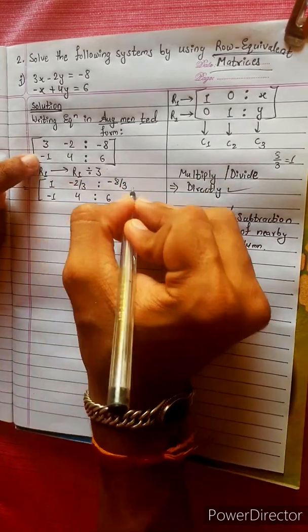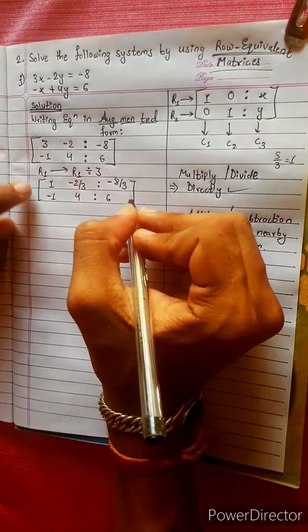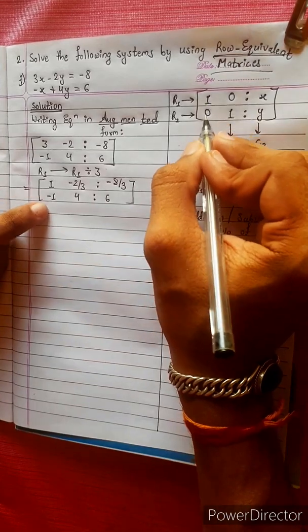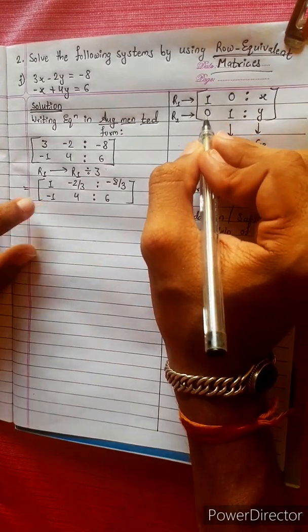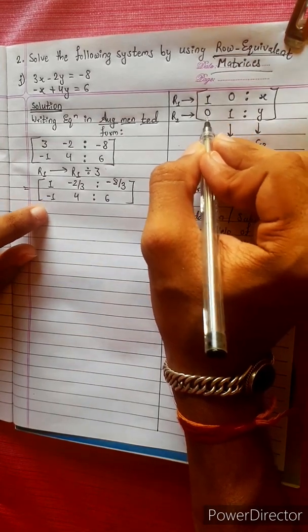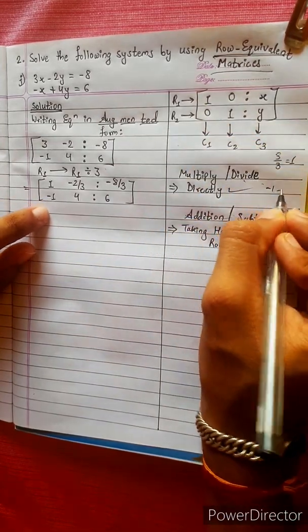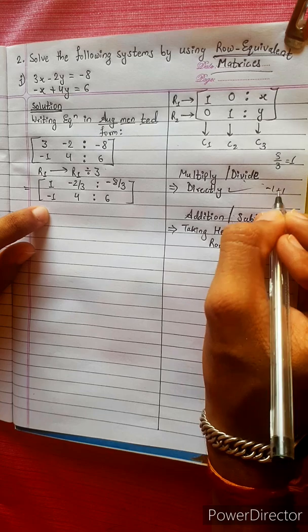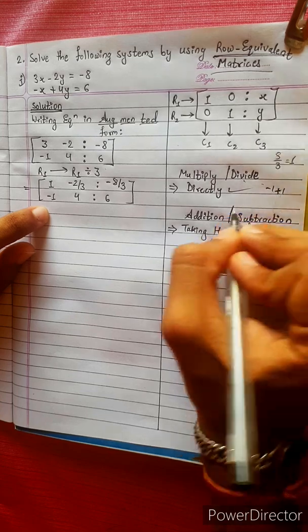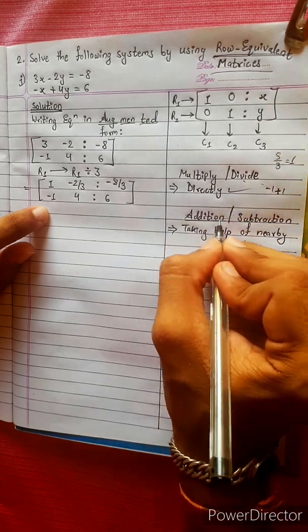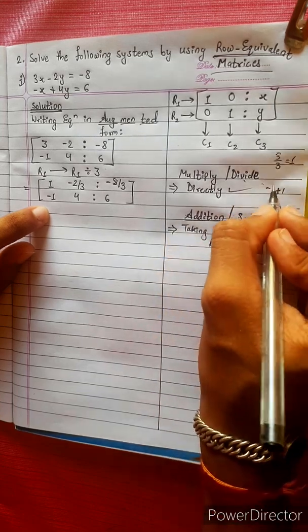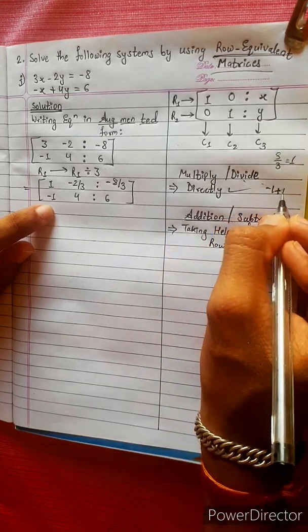4 is to 6, giving 1. Minus 1, then minus 1 plus 1 equals 0. Direct plus 1 actions applied.